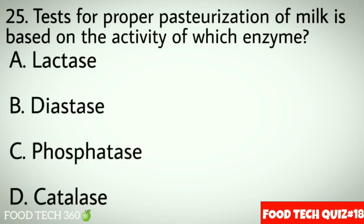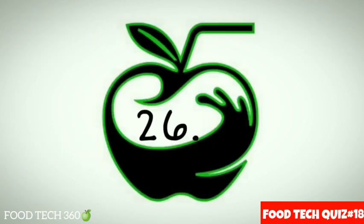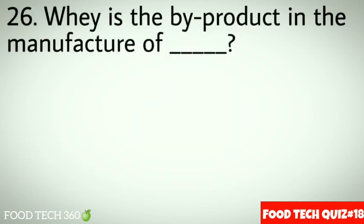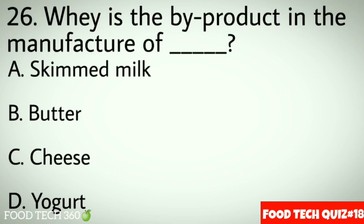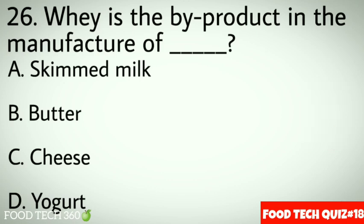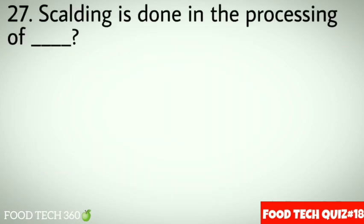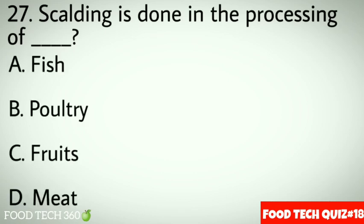Question 25: Test for proper pasteurization of milk is based on the activity of which enzyme? Options: A. Lactase, B. Diastase, C. Phosphatase, D. Catalase. Correct answer: C. Phosphatase. Question 26: Whey is the byproduct in the manufacture of dash. Options: A. Skimmed milk, B. Butter, C. Cheese, D. Yogurt. Correct answer: C. Cheese. Question 27: Scalding is done in the processing of dash. Options: A. Fish, B. Poultry, C. Fruits, D. Meat. Correct answer: B. Poultry.